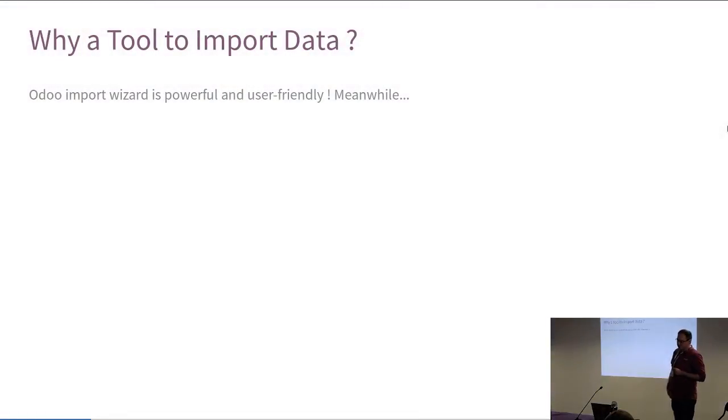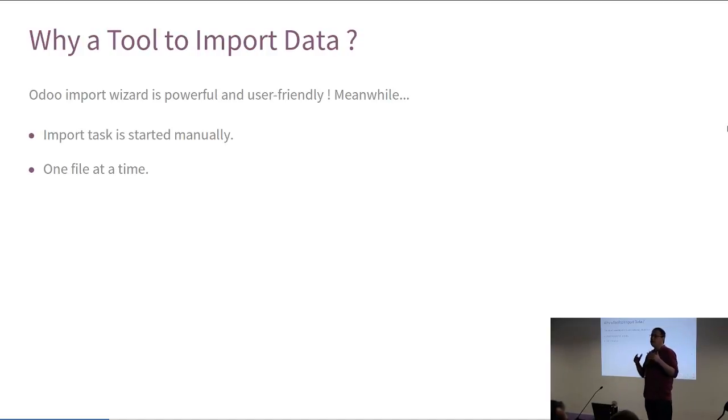So let's go! Why do we need an extra tool? Well, Odoo has already an import wizard that is quite powerful, that is somewhat easy to use. But if you think about it, your import must be started manually. You have to be in front of your computer and you have to process one file at a time. It means that you have to choose your right model, you have to click on the import button, choose your file, check your field mapping, test it and load it. So when you have to perform a full migration of your customer data, it could be quite fastidious. And also, there is one caveat.